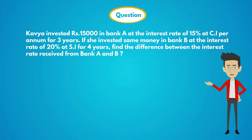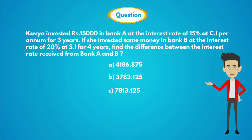Options are: Option A: 4186.875, Option B: 3783.125, Option C: 7813.125, Option D: 4225.875, and Option E: 4126.875.